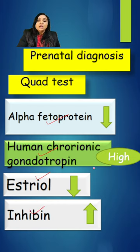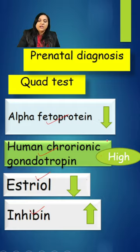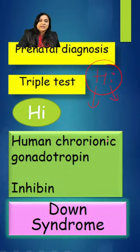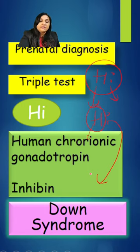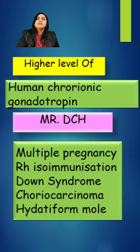In Down syndrome, alpha-fetoprotein and estriol will be on the lower side, while hCG and inhibin will be on the higher side. To remember this, use the mnemonic 'Hi Hi Hi' — hCG is high and inhibin is high — indicating a positive screening for Down syndrome.